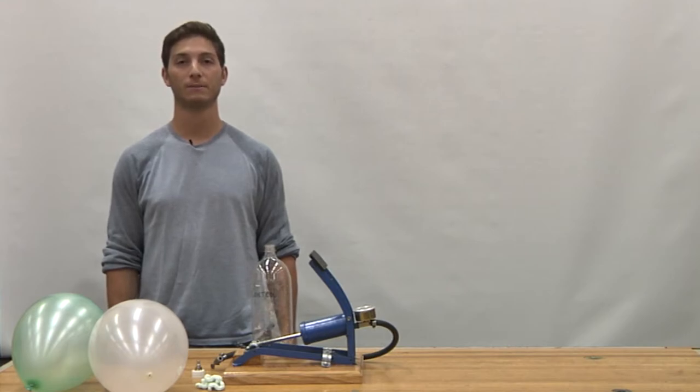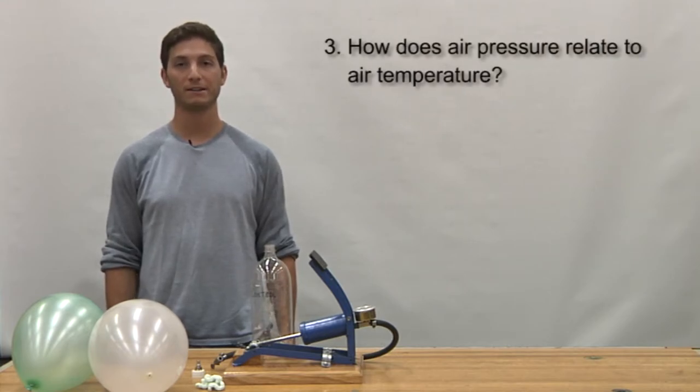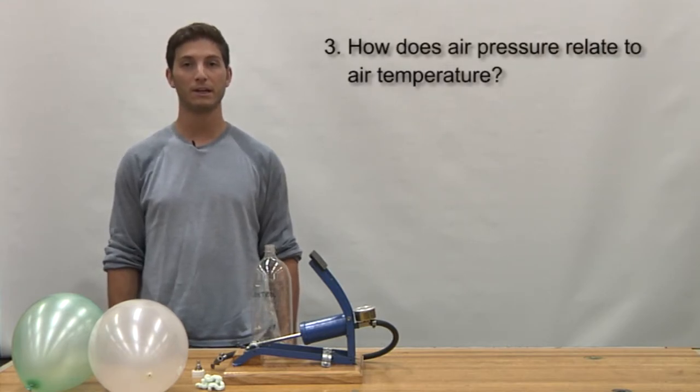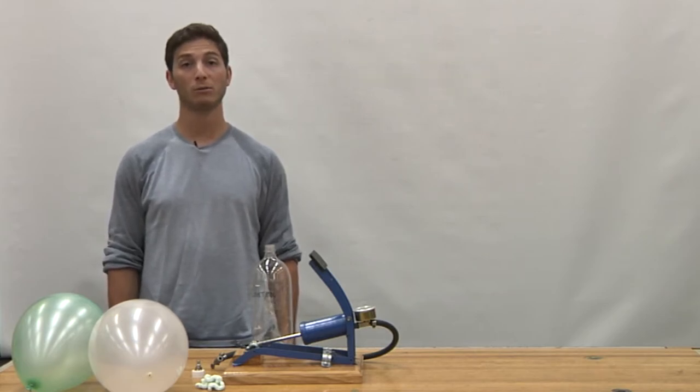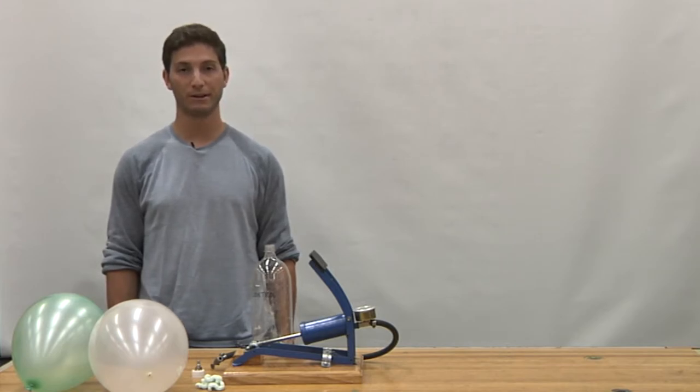Now onto the third question. How does air pressure relate to air temperature? Simply put, air pressure is directly related to air temperature, as colder molecules tend to be less active and use up less space in a given area. When a molecule warms up, they become more active, and they tend to use more space, resulting in greater air pressure.